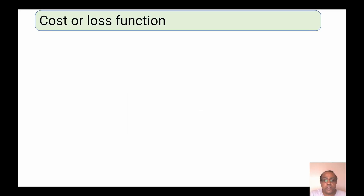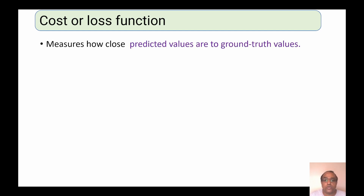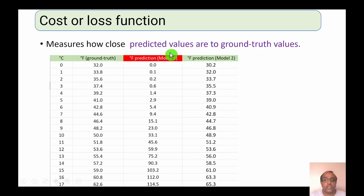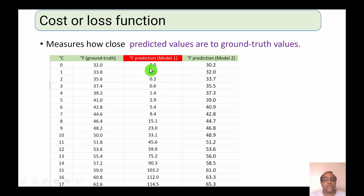In machine learning or deep learning, a loss function measures how close predicted values are to ground truth values. For example, assume we have two models — model one and model two — that predict degree Fahrenheit values using degree Celsius as input. Model one's predicted values are way off compared to ground truth, while model two's predicted values are close. So model one has a very large loss and model two has a smaller loss. This is the high-level definition of a cost or loss function.